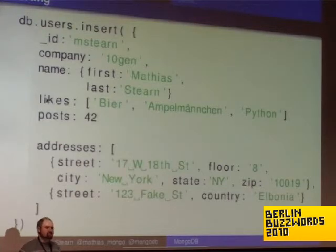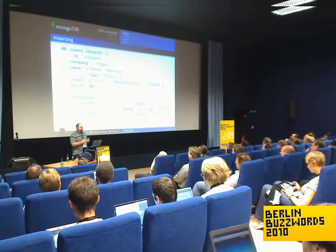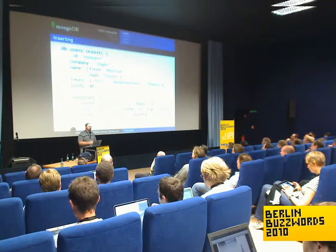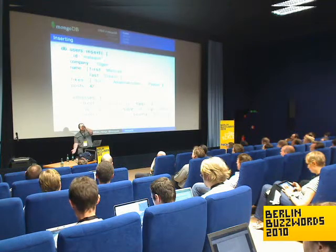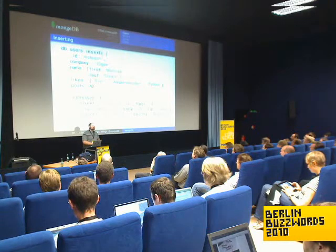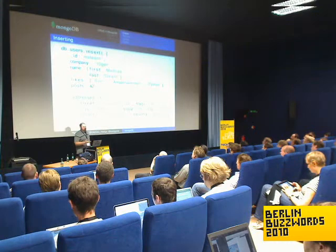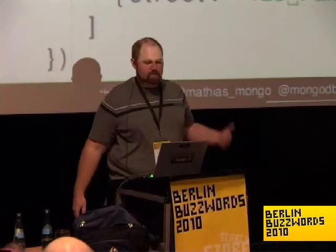Arrays are probably the coolest feature in the basic database. Traditionally, when you wanted to do tags or any sort of list in a relational database, the solution was to have your tagged object, your tags table, and then a join table that doesn't represent anything in the real world — just a thing to link the two. That's silly. Just put the tags as an array. When you query against it, if I say find me everyone who likes beer, it would find me in this case.